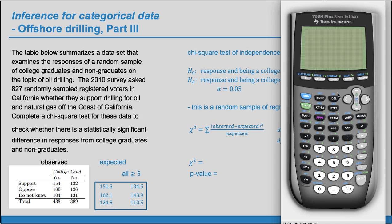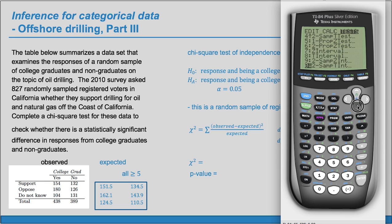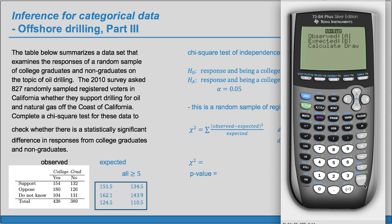Now we can run the test by going to Stat, Tests, and find the chi-squared test. This works for both independence and homogeneity — there's a separate one for goodness of fit. We can hit Enter. We already have the observed entered in Matrix A. We did not enter the expected, but the calculator will calculate it itself. So we'll just do Calculate, and there's our chi-squared of 11.46 and our p-value of 0.003.